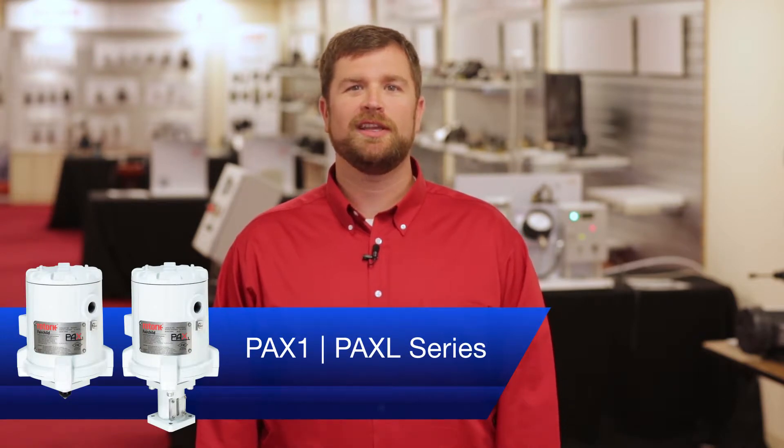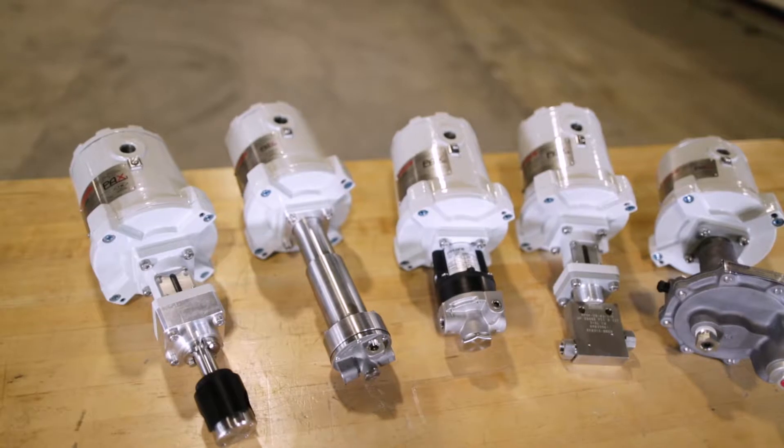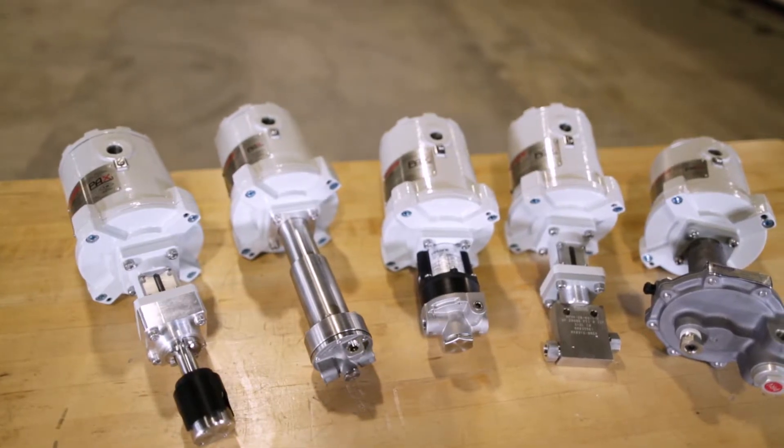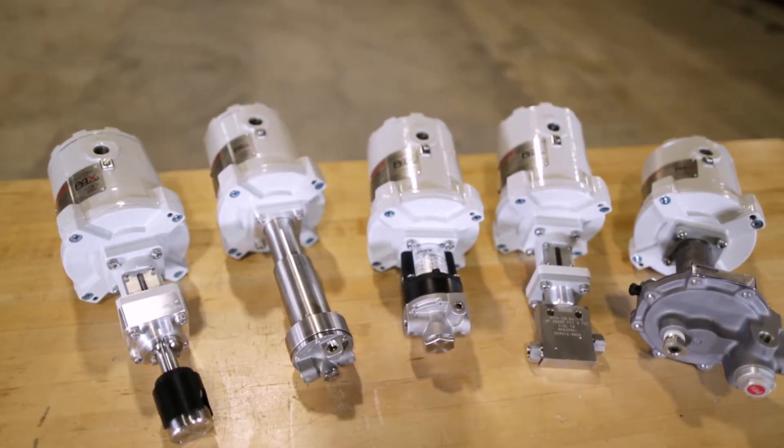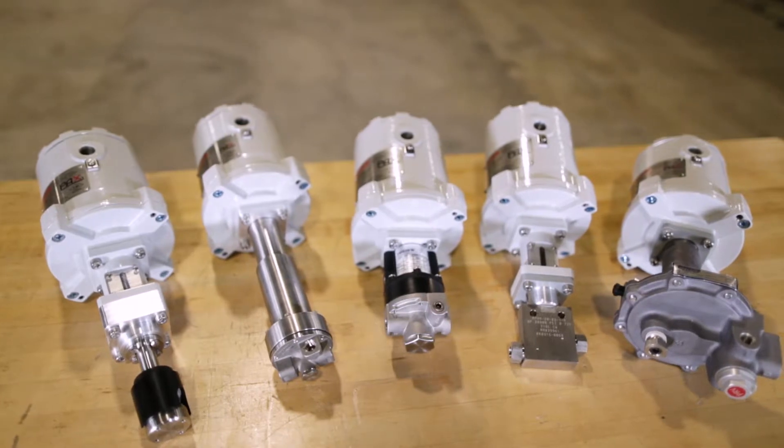The PAX 1 and PAX L product series are one of the first electric actuators created to automate regulators and small valves. They can be paired with almost any pressure regulator, including but not limited to the Fairchild product line.